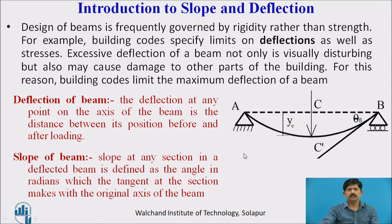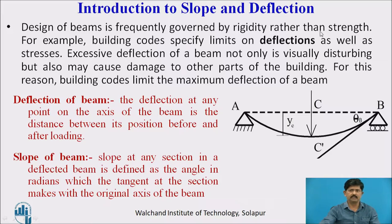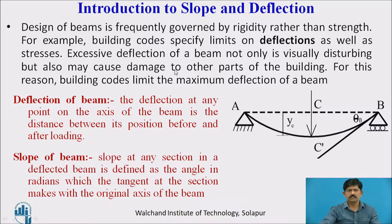Why are slope and deflections necessary to be checked? Because the design of a beam is frequently governed by rigidity rather than its strength. Many building codes specify limits of deflection as well as stresses. Excessive deflection of a beam not only is visually disturbing but also causes damage to other parts of the building.